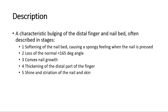Clubbing is often described in stages. Stage 1 is softening of the nail bed, causing a spongy feeling when the nail is pressed. Stage 2 is loss of the normal less than 165 degrees angle. Stage 3 is convex nail growth. Stage 4 is thickening of the distal part of the finger. And stage 5 is shine and striation of the nail and skin.